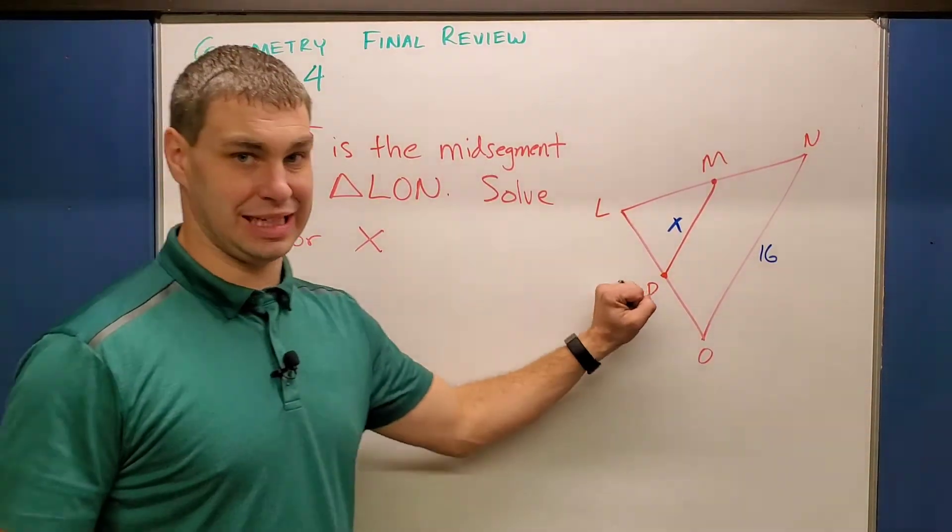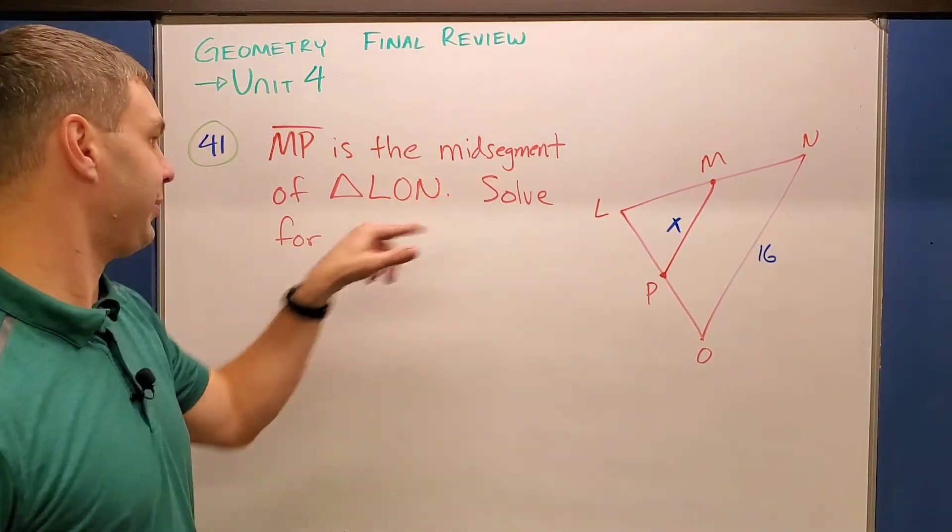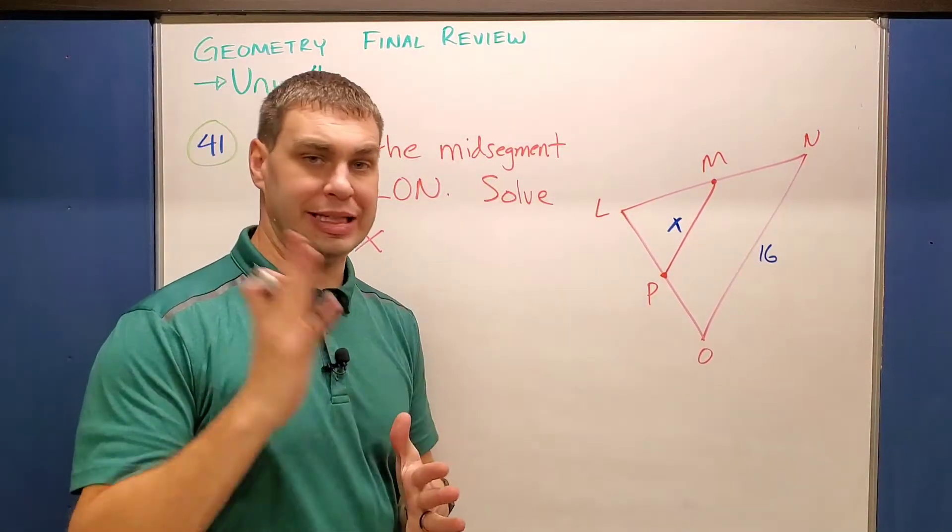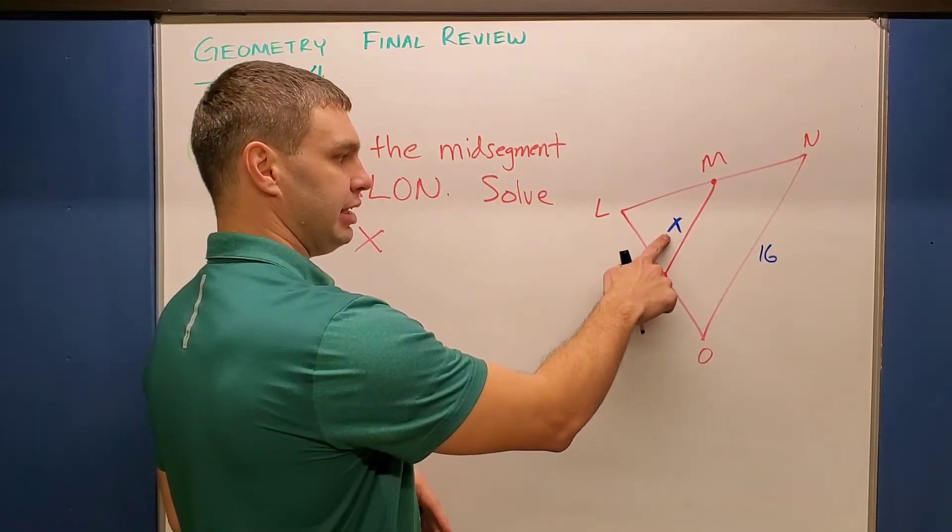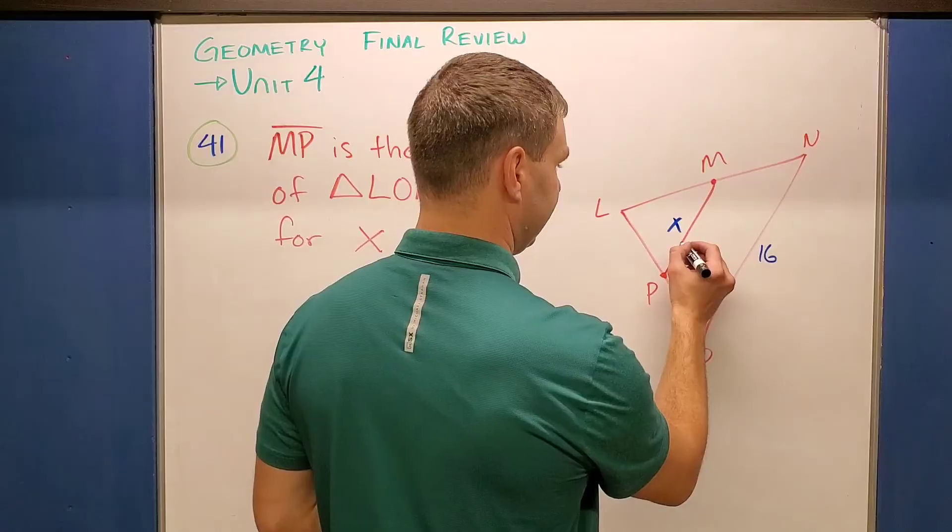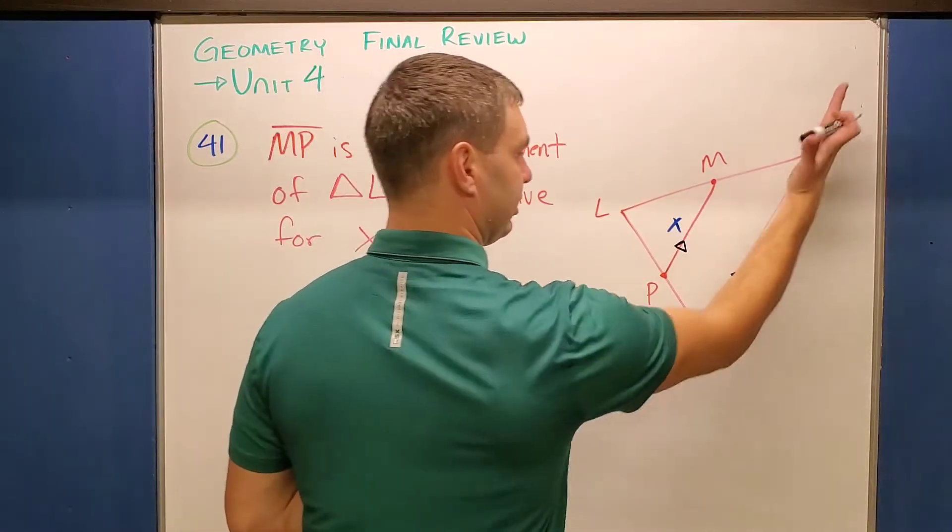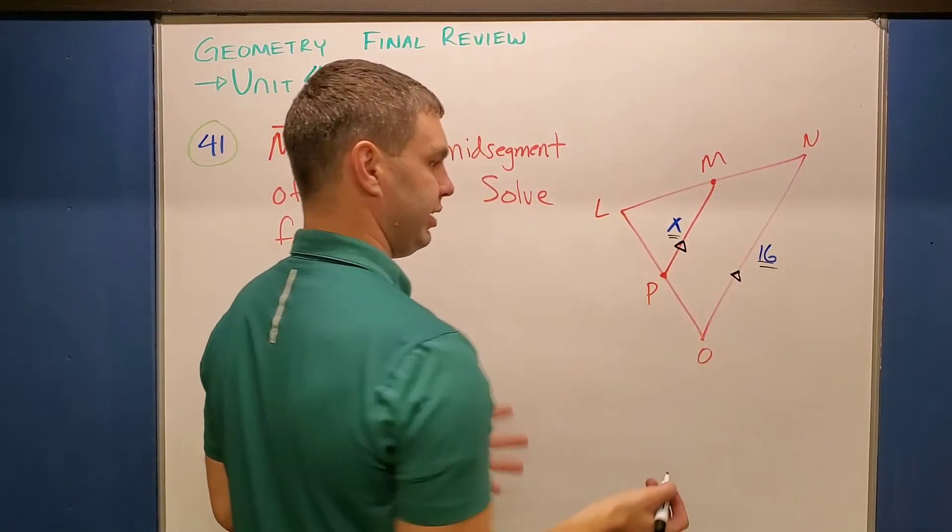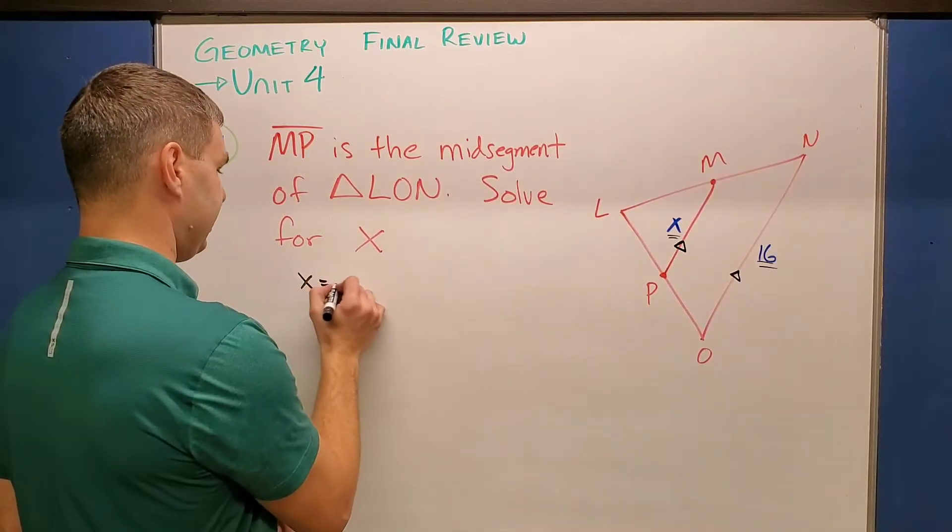Next question, number 41, is talking about mid segments. This says MP right here is the mid segment of triangle LON, solve for X. So pretty straightforward. Now one thing you have to remember about mid segments is that they are half of their parallel sides length. So again, hopefully you can kind of see in this picture this and this are parallel. And so the outside one, the exterior of the triangle, is going to be double this length. In other words, X is going to be eight. So we can just say that X equals eight.